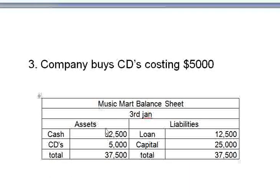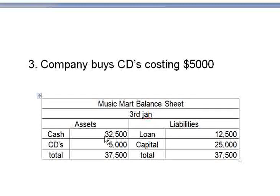Under the assets column we find a new entry called 'CDs' worth five thousand, while the cash entry is reduced by five thousand. What we basically did is convert one asset into another asset. Assets are tools or means for doing business — with just cash I can't do business, so I purchased CDs worth five thousand. On the right side there is no change.